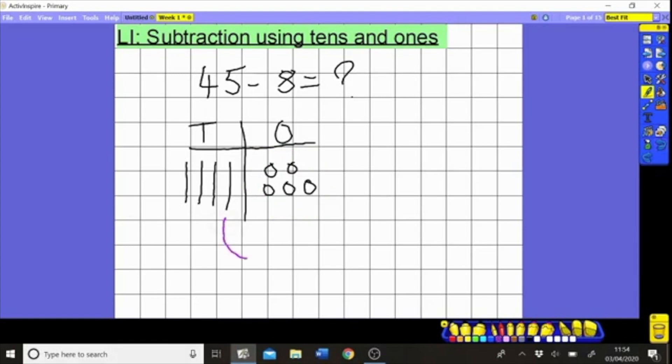So what we're going to do this time is we're going to go over to our friend in the tens and we're going to exchange one ten for ten ones - three, four, five, six, seven, eight, nine, ten. We now have enough ones in here to take away eight ones because we have fifteen ones all together now.